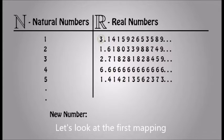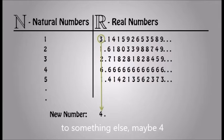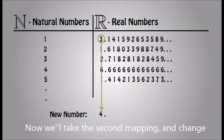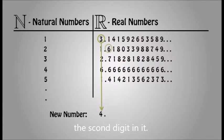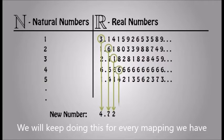Let's look at the first mapping. Take the first digit and change it from 3 to something else, maybe 4. Now we will take the second mapping and change the second digit in it. So in this case we will change 6 to 7. We will keep doing this for every mapping we have.